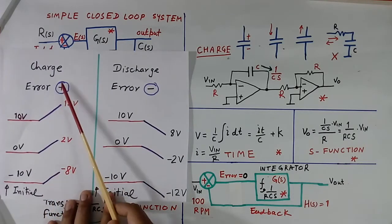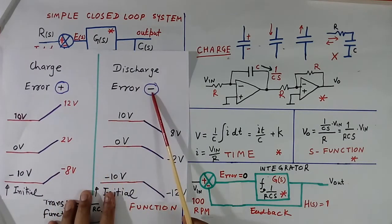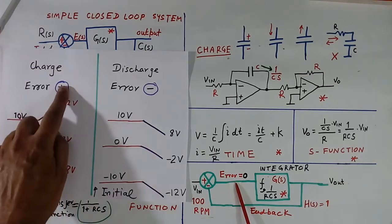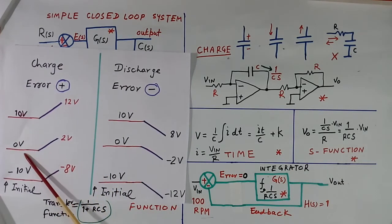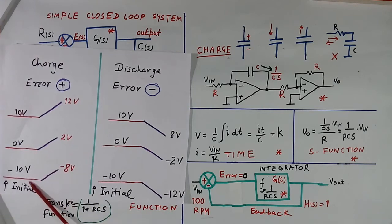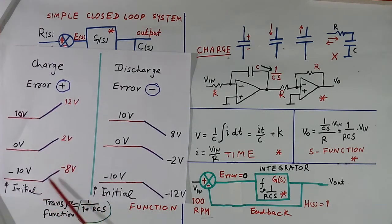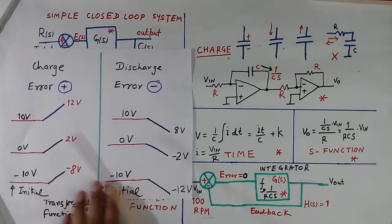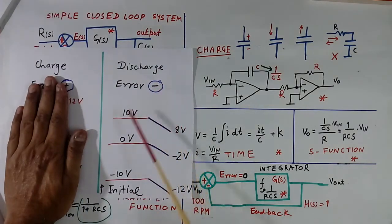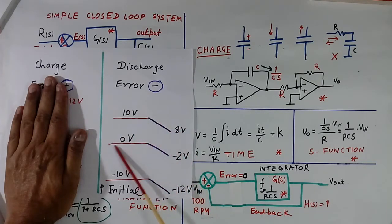Now here you see: this is the error. Error can be positive or negative. If error is positive and output is 10, it will become 12; 0 will become 2; or minus 10 will become minus 8 — because the input is more than feedback, it will always increase, and this is the initial condition. Similarly, if error is negative, output will decrease: 10 will become 8; 0 will become minus 2; or minus 10 will become minus 12.